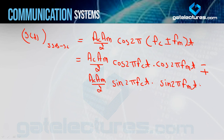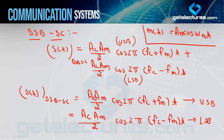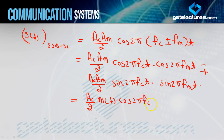Jab humne DSB-SC ka derivation kiya tha for single tone modulation, humne m(t) = Am·cos(ωm·t) consider kiya tha. Toh yahan pehla term Ac/2 · m(t) · cos(2π·fc·t) ban jata hai. Doosre term mein Am·sin(2π·fm·t) hai — joki m(t) se related hai. Dono ka amplitude Am·Am hai, frequency fm hai, bas cos ki jagah sin ho gaya. That means 90 degree phase shifting hui hai — cos aur sin ke beech mein 90 degree ka phase shift hota hai.